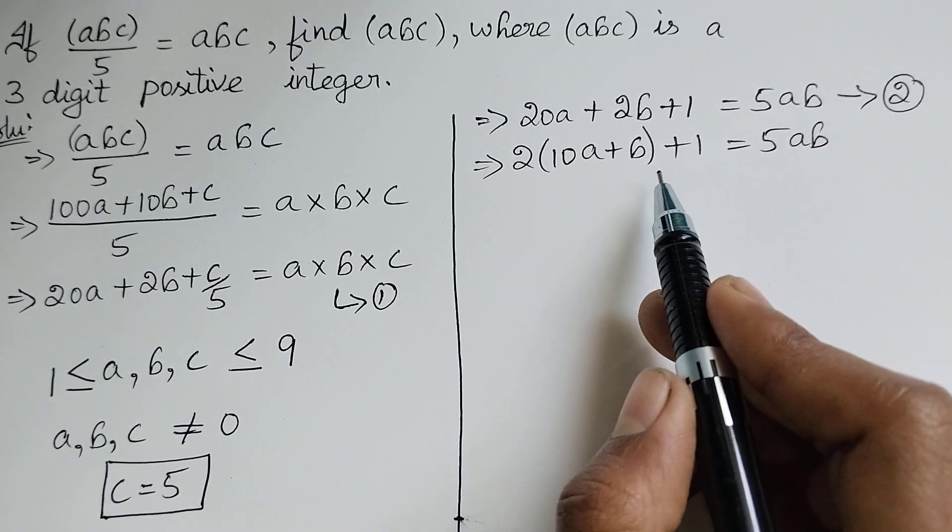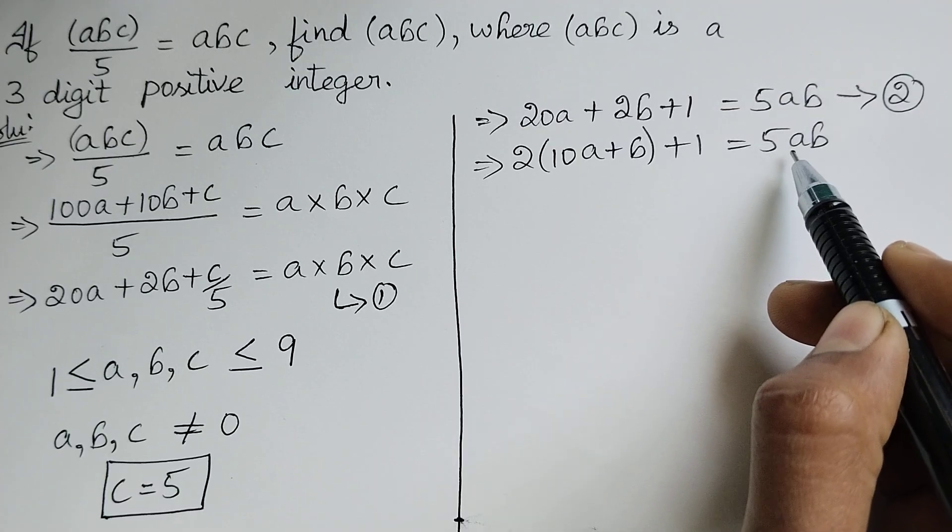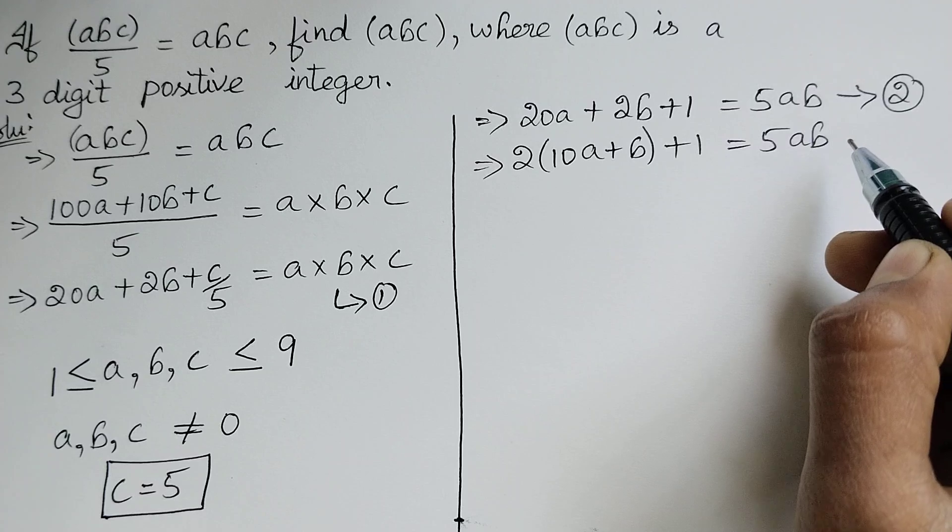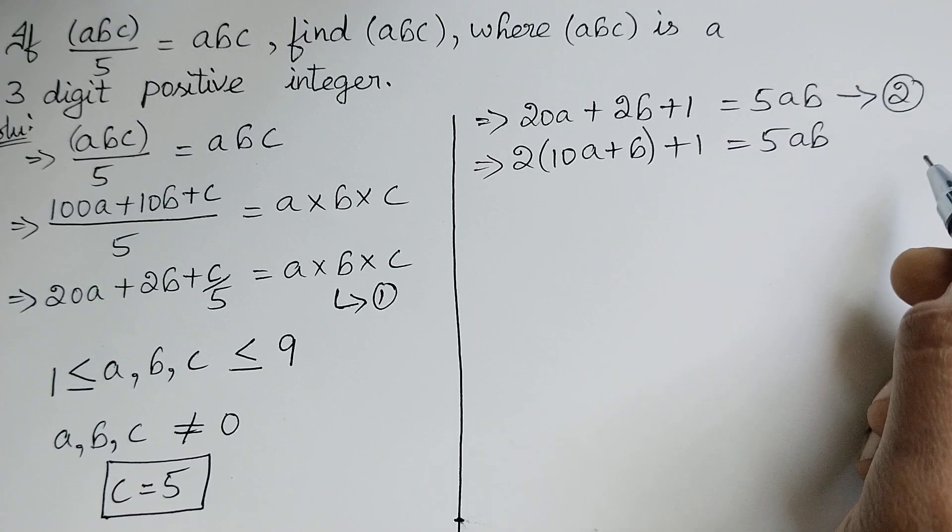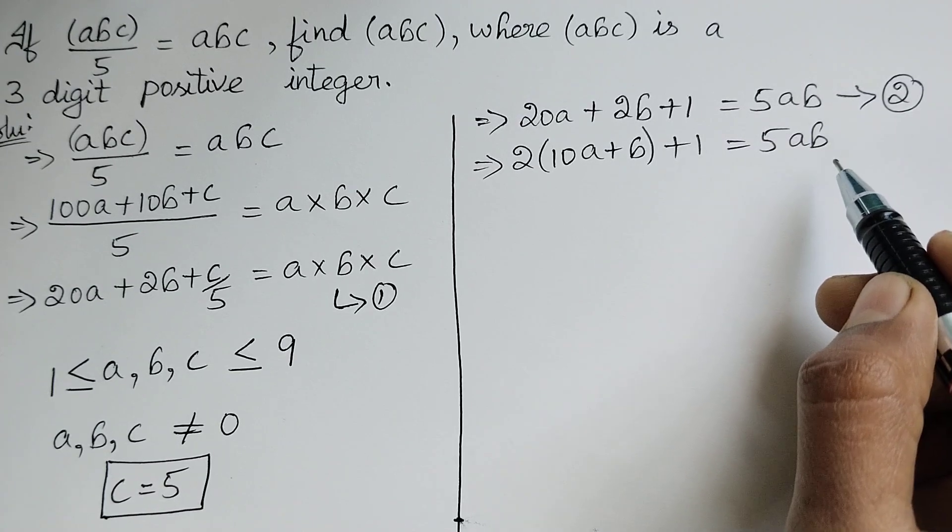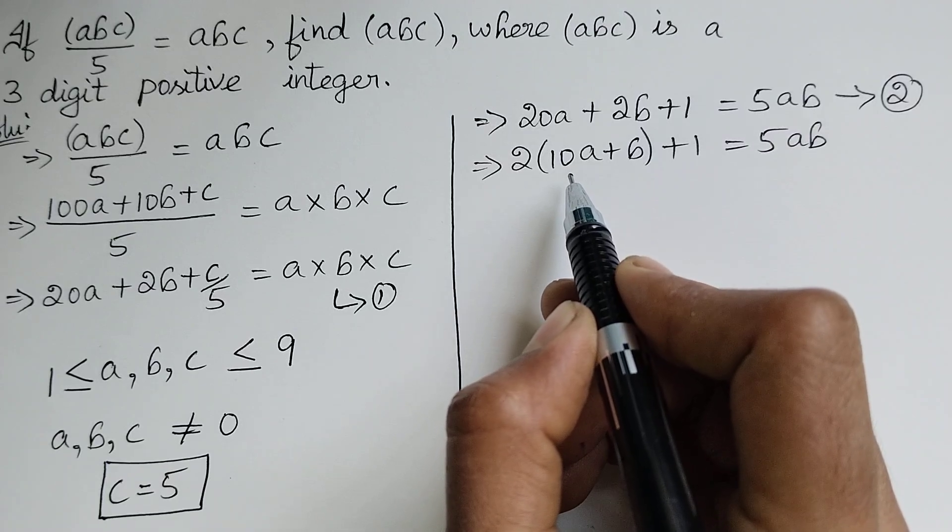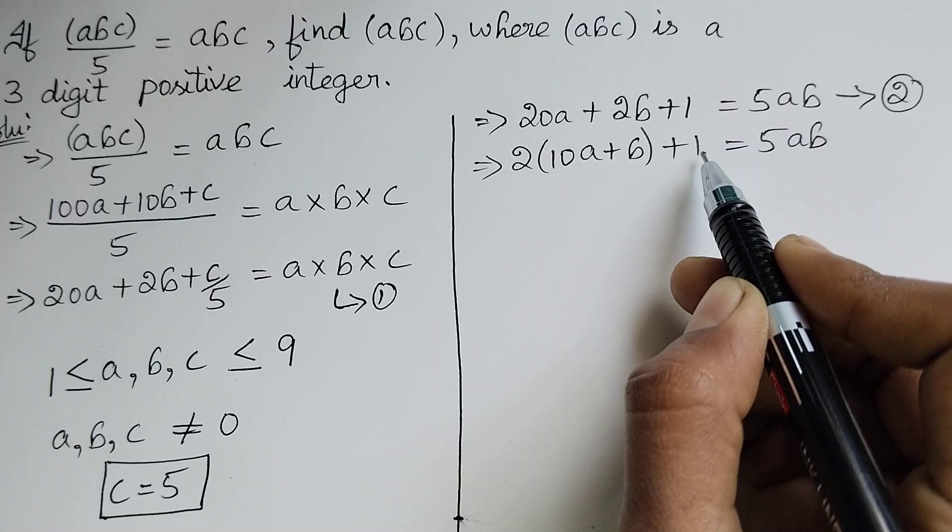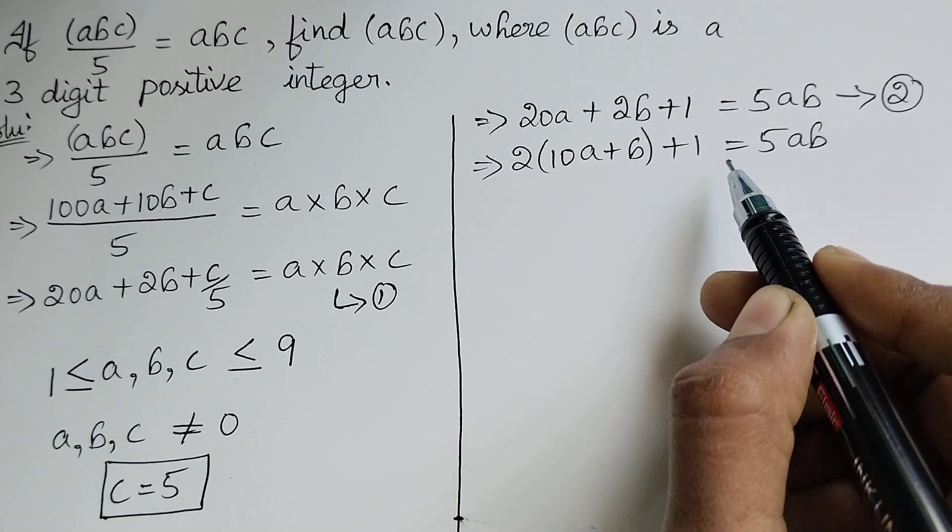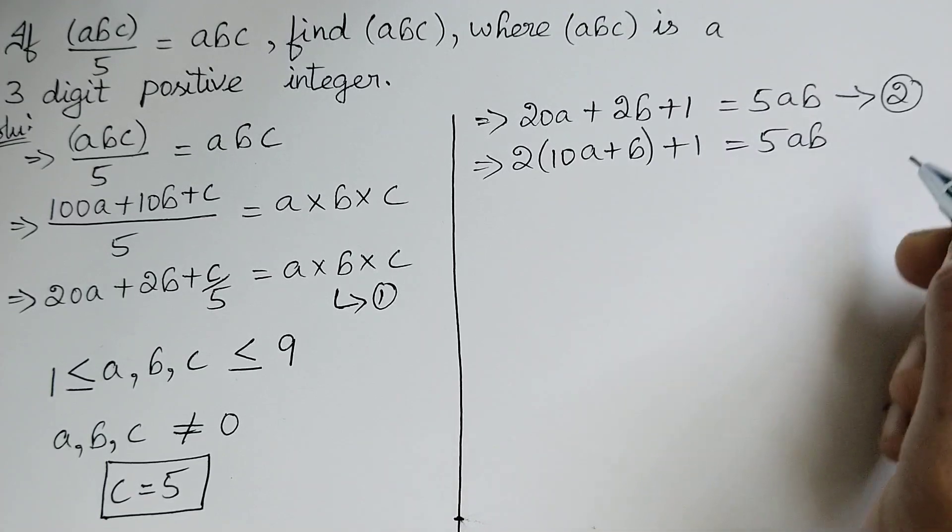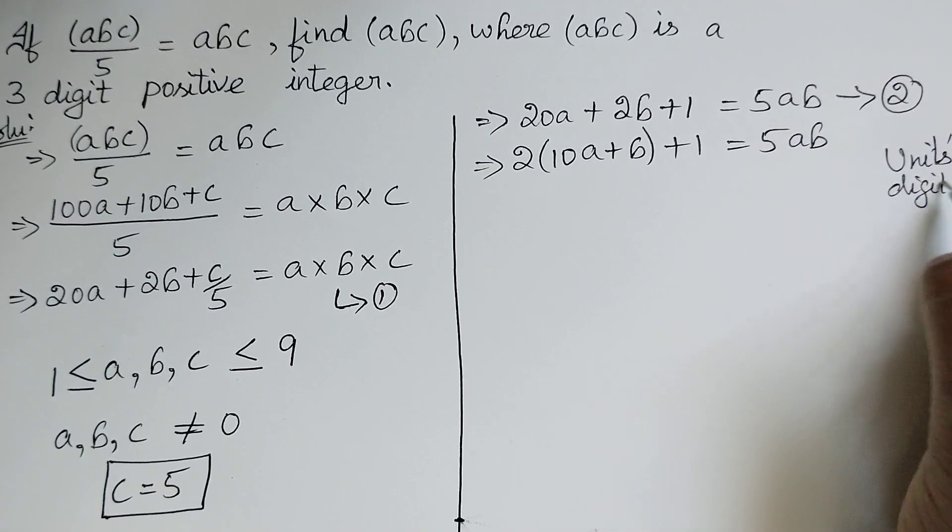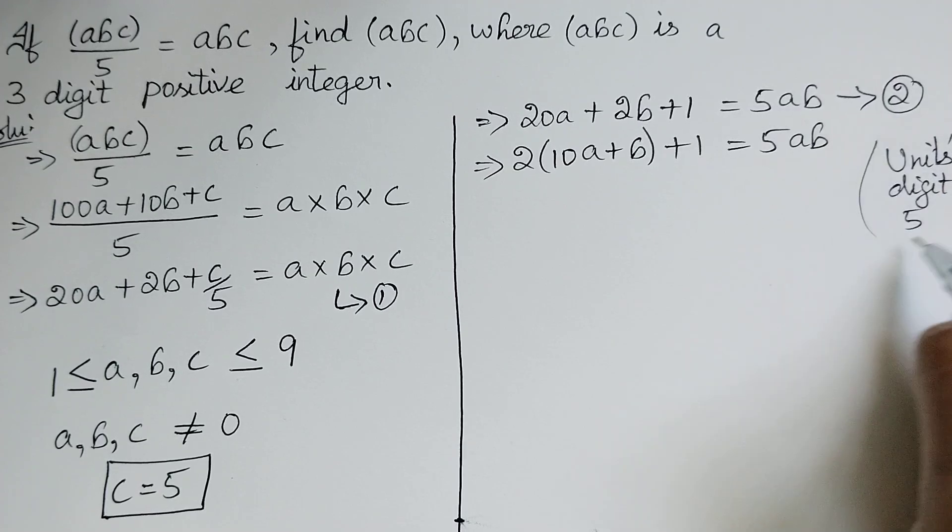Now we can see that the right-hand side of this equation is a multiple of 5. Therefore the units digit must be 0 or 5. Coming to the left-hand side we can see that the third term is +1. Therefore the units digit will not be 0. It must be 5.